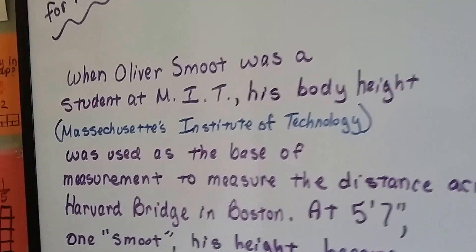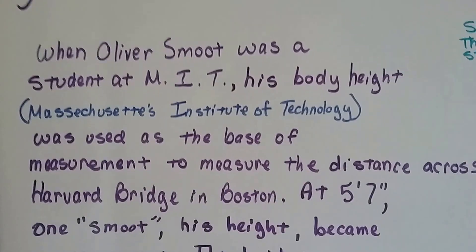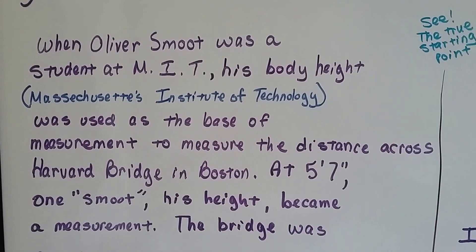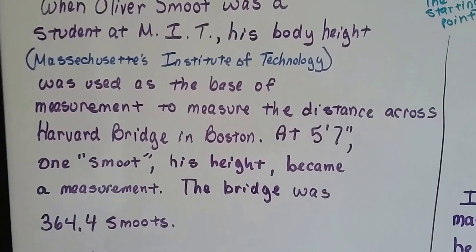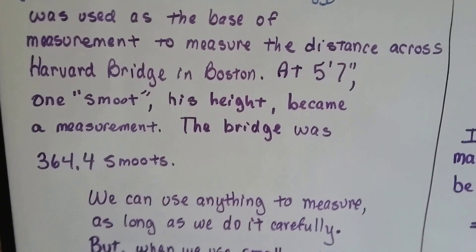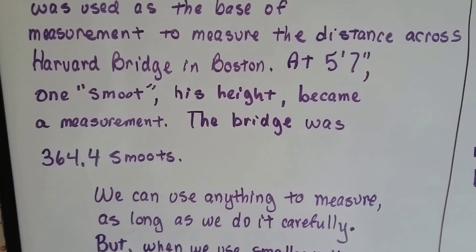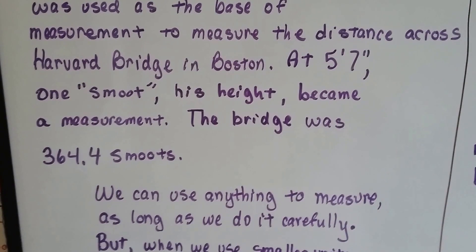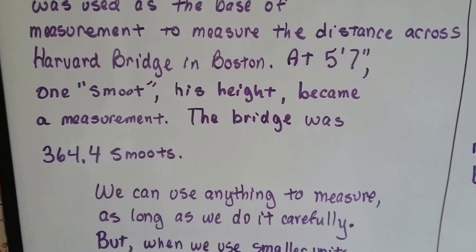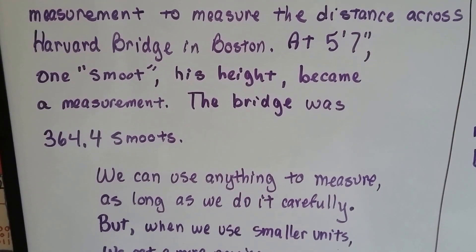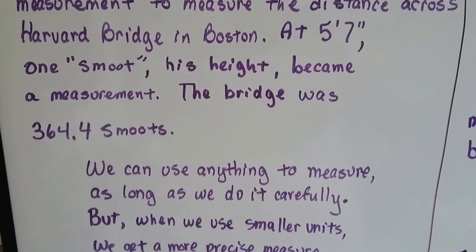When Oliver Smoot was a student at MIT, the Massachusetts Institute of Technology, his body height was used as the base of measurement to measure the distance across the Harvard Bridge in Boston. At 5'7", one Smoot, his height, became a measurement. The bridge was 364.4 Smoots. Isn't that funny?